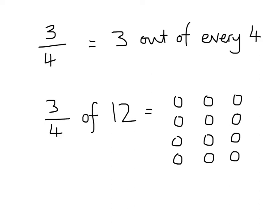What about three quarters? Using the same method: three out of every four means three quarters. So three quarters of twelve means I shade three out of each group of four — three out of that four, three out of that four, three out of that four — giving me nine.